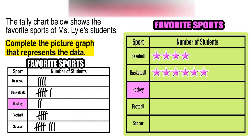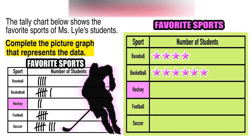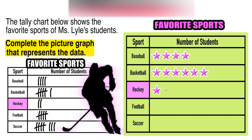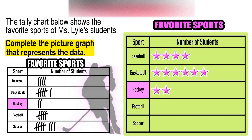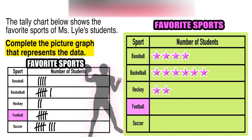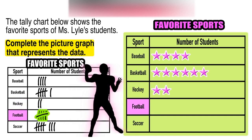Next up is hockey, which was picked by two students because it has two tallies. So on our picture graph, we need to include two stars. Football, which is my favorite sport, has five tally marks, so we will include five stars on our picture graph.